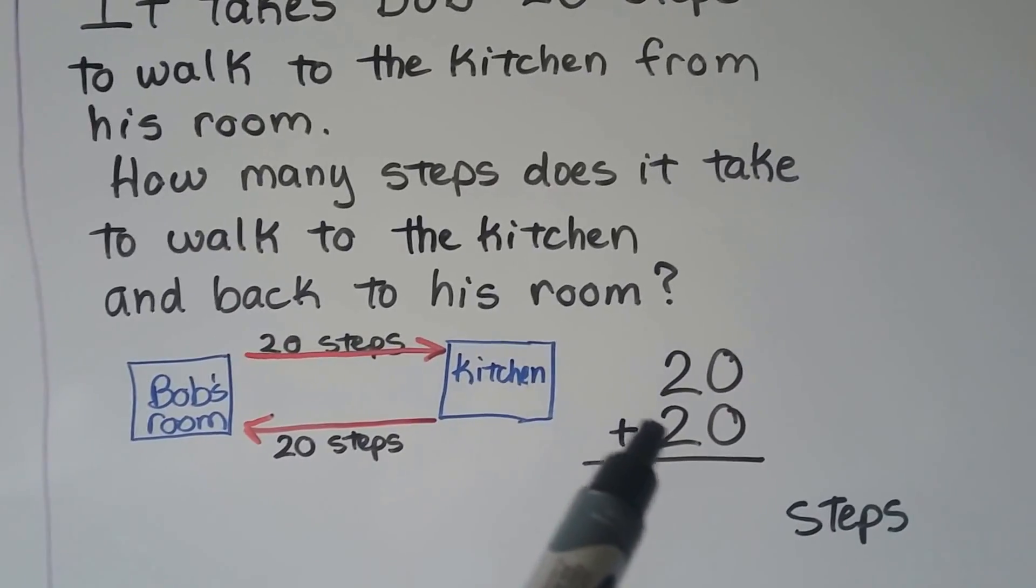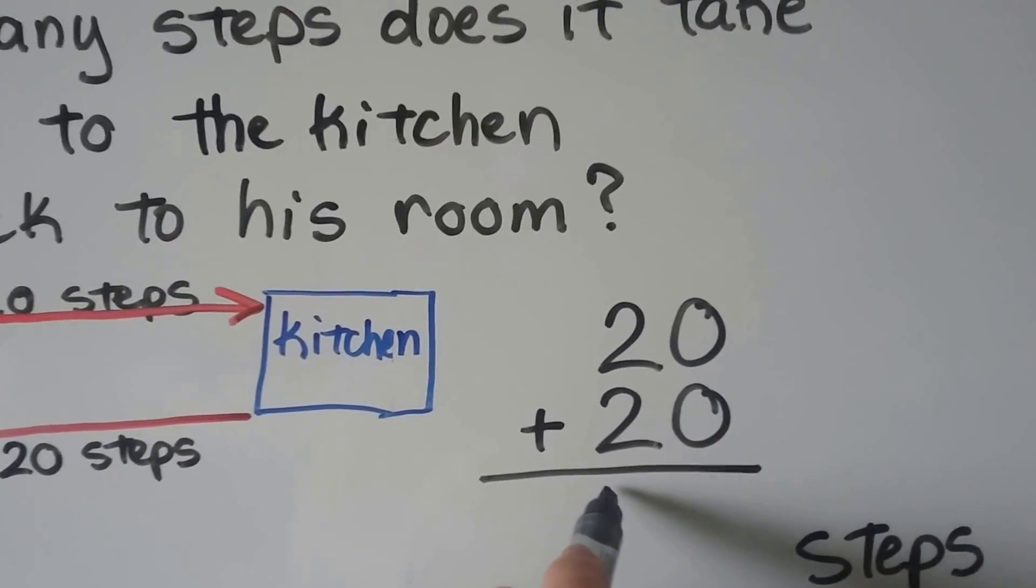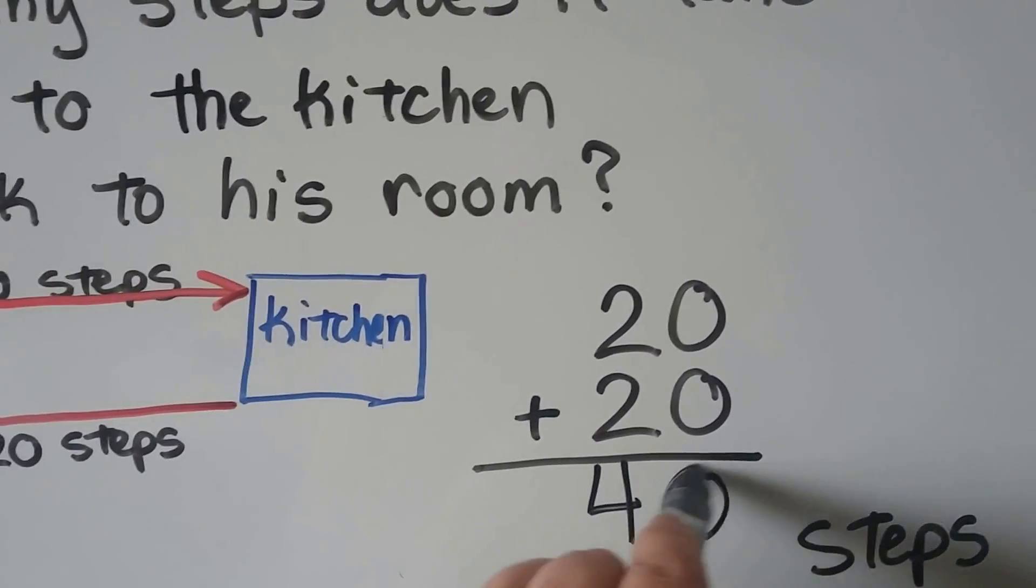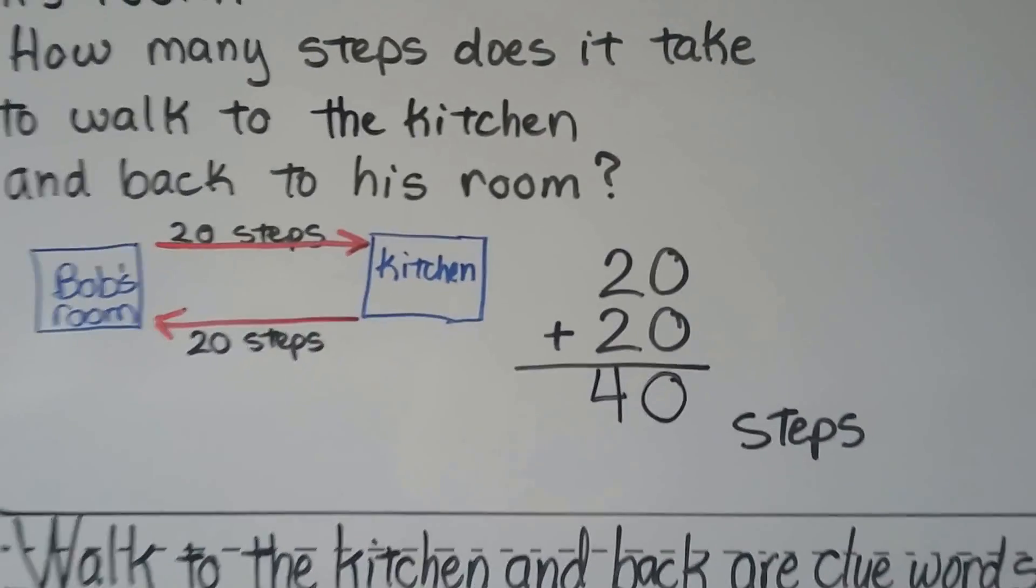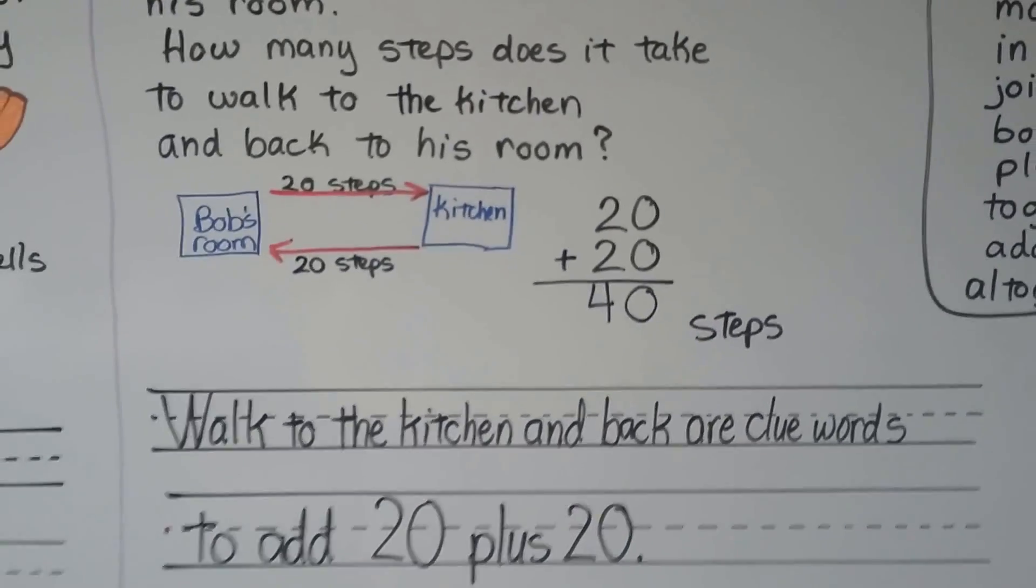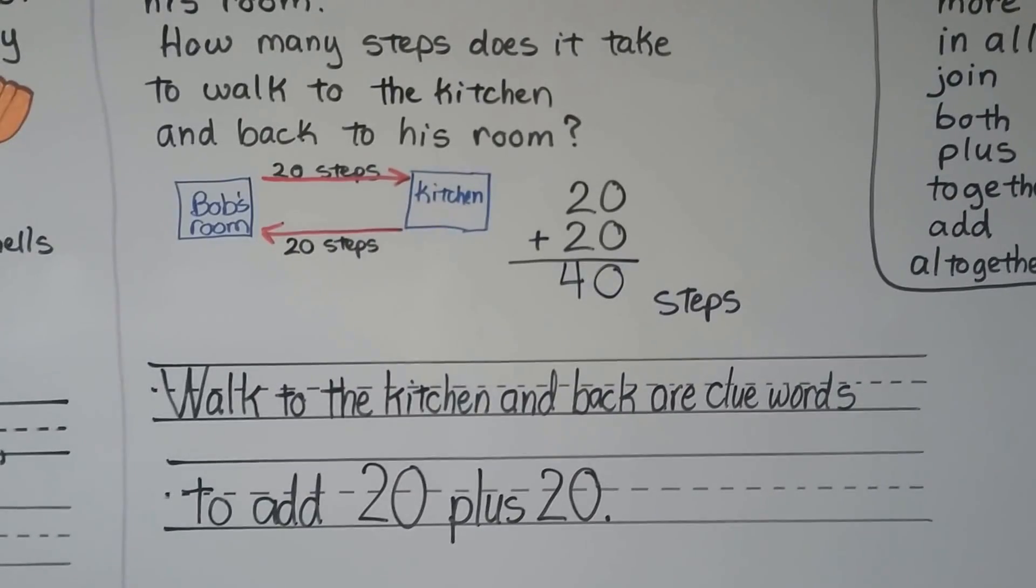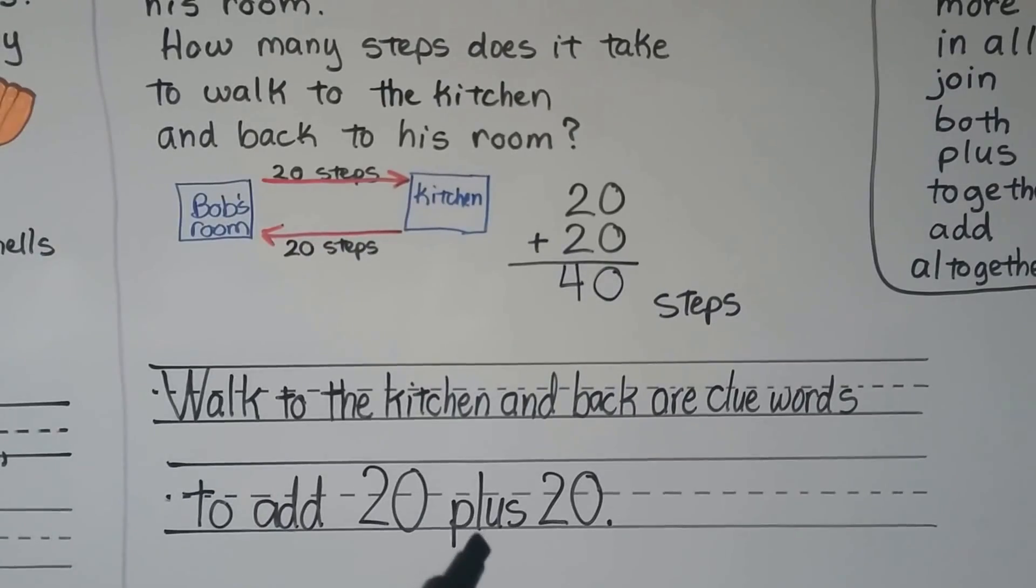We can add twenty plus twenty. We're adding two tens plus two tens. That makes four tens and zero ones. It's forty steps. Walk to the kitchen and back are clue words to add twenty plus twenty.